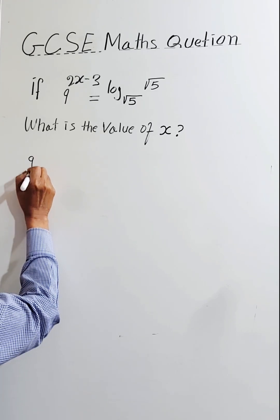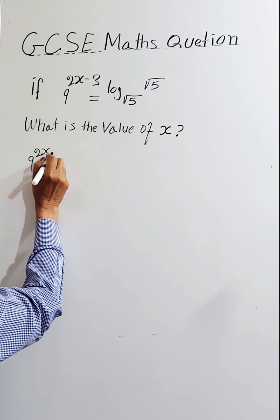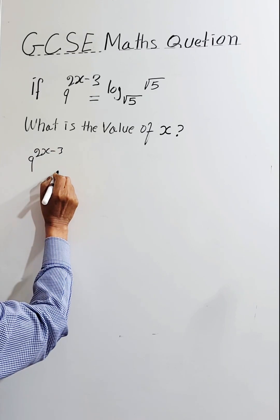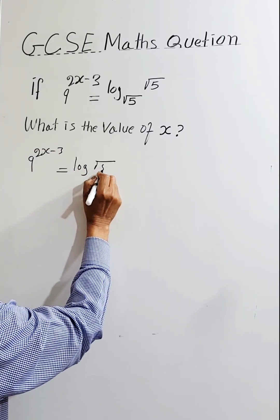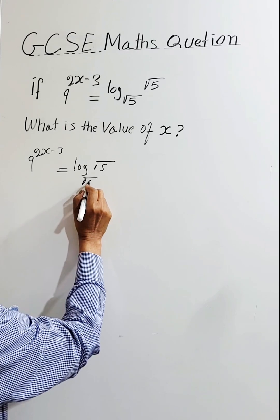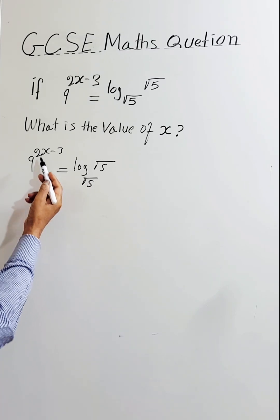So 9 to the power of 2x minus 3 equals log root 5, base root 5. What is the value of x?